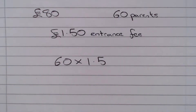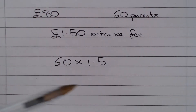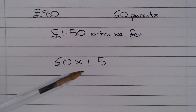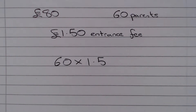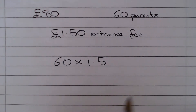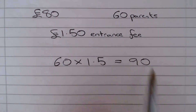We are more than welcome to do this in a grid, but if you are multiplying a number by 1.5 you are increasing it by 50%, or you are increasing it by a half. And a half of 60 is 30, so 60 plus the extra 30 gives us 90.